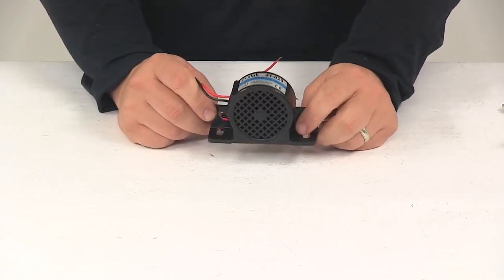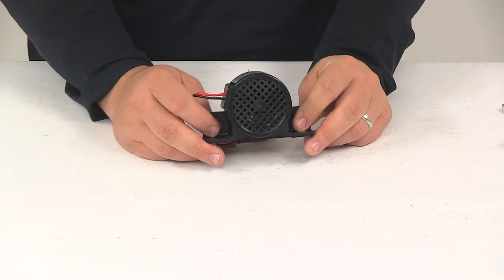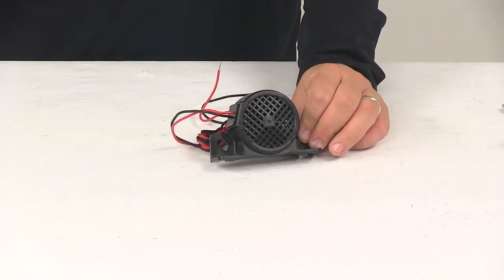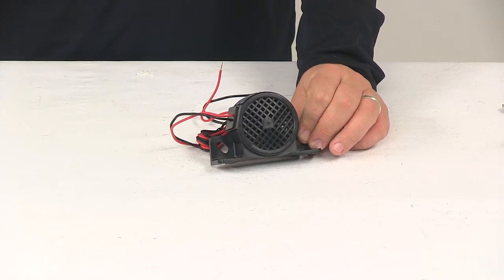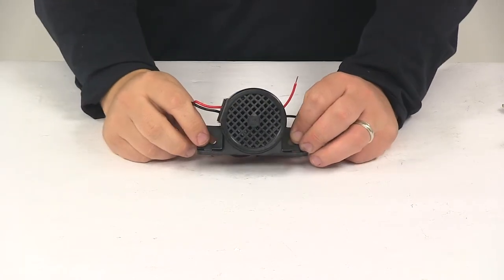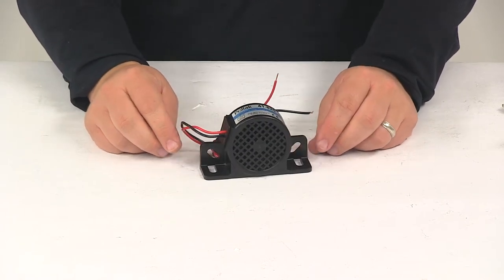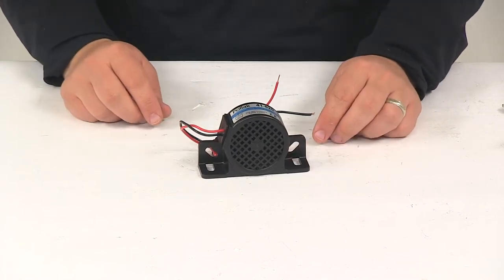It can be used on positive and negative ground vehicles. It's voltage spike protected and reverse polarity protected. It conforms to SAE J994 Type C. It meets state, federal and U.S. Army Corps of Engineers requirements and it meets all European standards for on and off road vehicles.